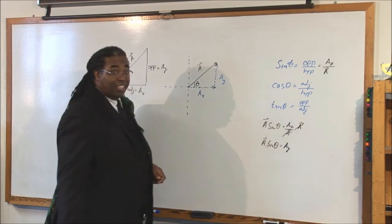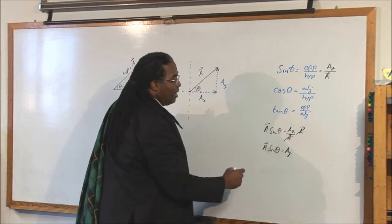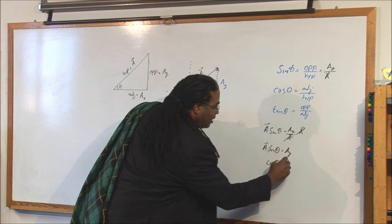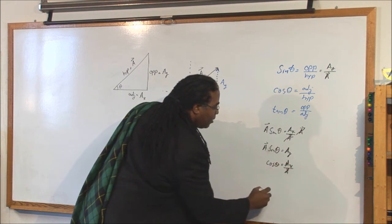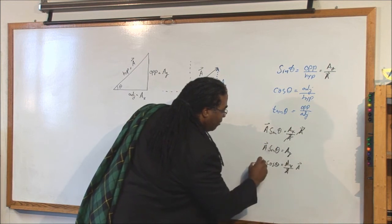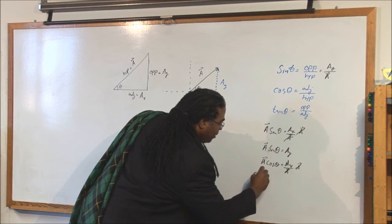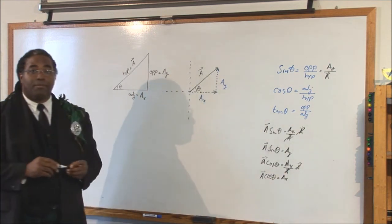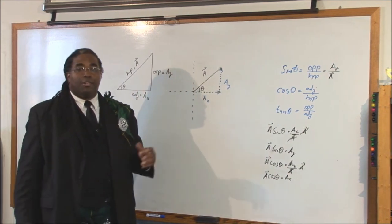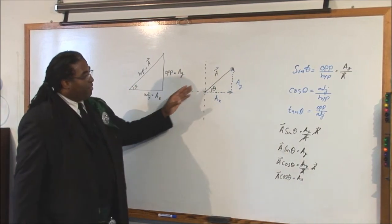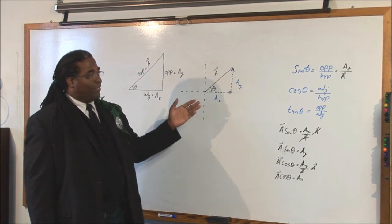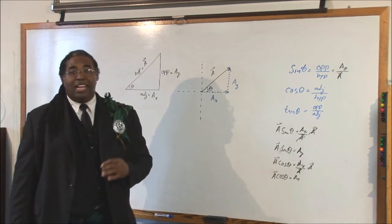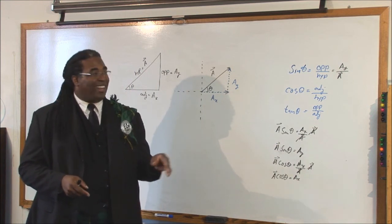If you want to get the side adjacent, or A sub x, just use the cosine function. Cosine theta equals A sub x over vector A. Multiply both sides by vector A, the A's cancel, and vector A times cosine theta equals A sub x. It's really just that simple. Whenever you get a vector and you need to know its x and y components, all you have to do is go to your trig functions. If you don't remember them, write them out and use your algebra. If you do it enough, you'll start to remember it and won't have to write it out anymore.